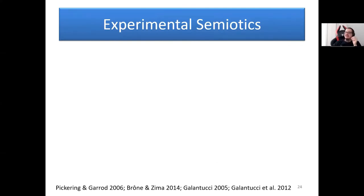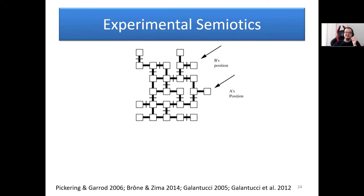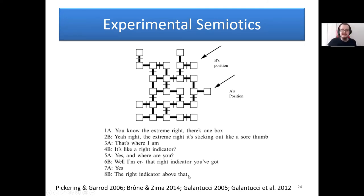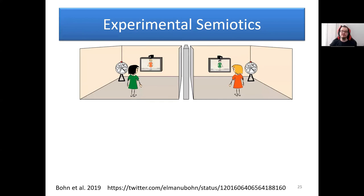This is also studied in experimental semiotics. In the classical maze game task, players have to converge on a shared location but can't see where the other person is, communicating via a chat box. One says 'you know the extreme right — there's one box, you know what the extreme right is, sticking out like a sore thumb — that's where I am, it's like a right indicator.' The other responds 'yes' and then says 'I'm that right indicator you've got — yes, the right indicator, above that.' Both players converge on a shared referring expression — 'right indicator' — online, which then becomes basically a micro-convention.